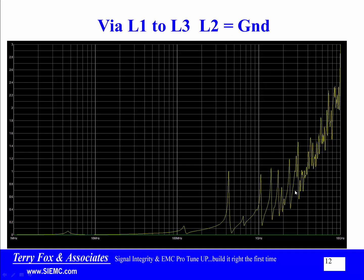If I backdrilled this via — removing the stub from layer 3 down to layer 8 — most of those resonant peaks go away, and this becomes a very simple, safe via probably up to fairly high frequencies, around 5 gigahertz.